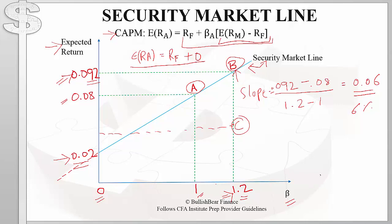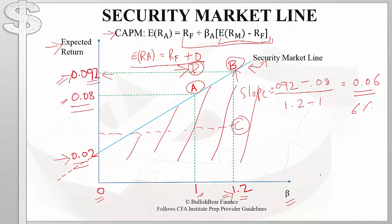On the other hand, point D has a beta of 1 and an expected return of 9.2%. We know that for a beta of 1 the expected return should be 8%, so asset D is undervalued and its price must increase so that its expected return can decrease. For the exam: any asset that plots below the security market line is overvalued; any asset that plots above the security market line is undervalued.